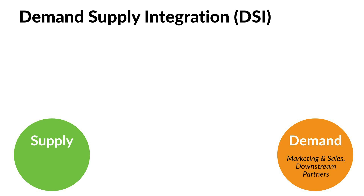Downstream supply chain partners are also part of the demand side of the business. In contrast, the supply side consists of the core supply chain functions like sourcing, operations, and logistics — those are the folks that plan, source, make, move, and help sell products. Upstream suppliers are also part of the supply side of the business.